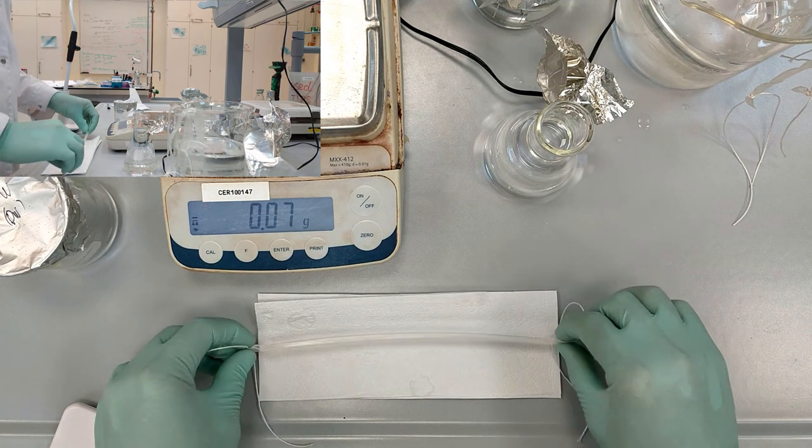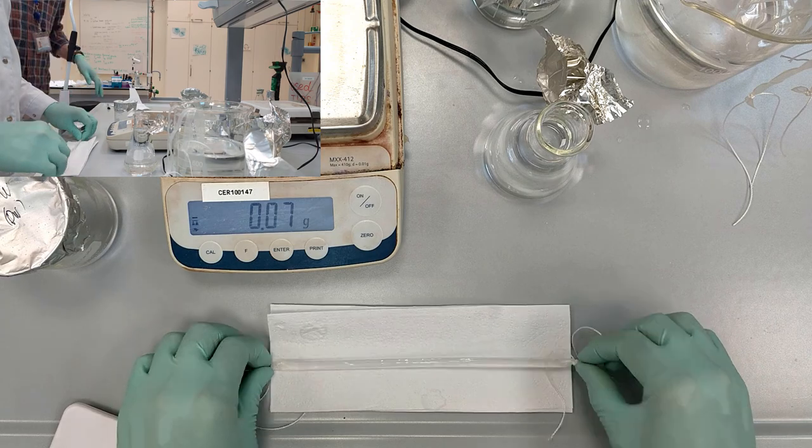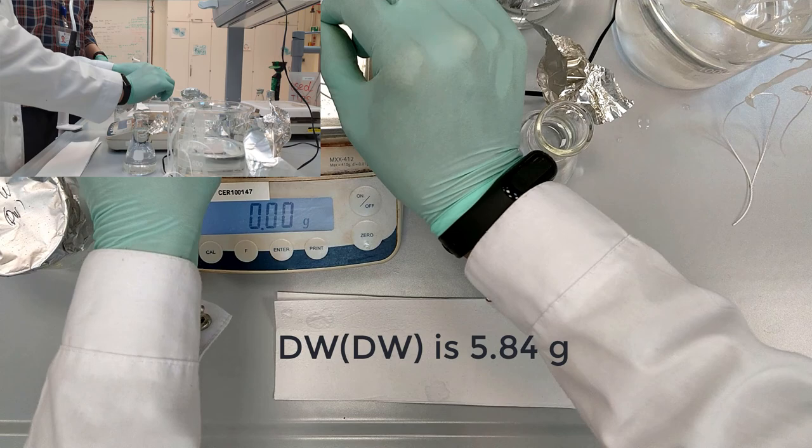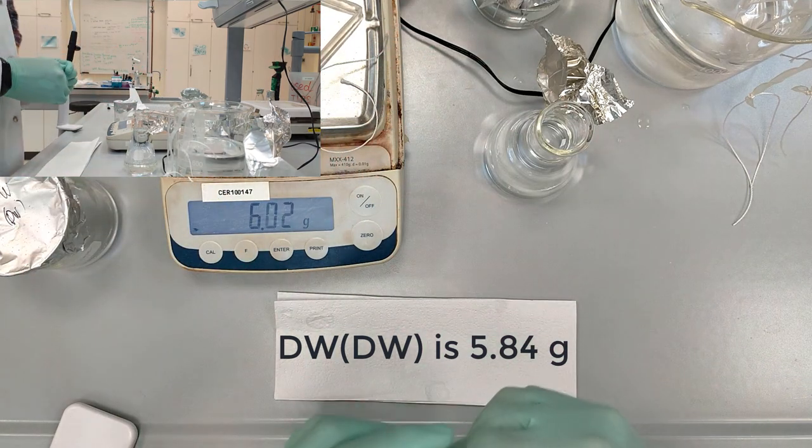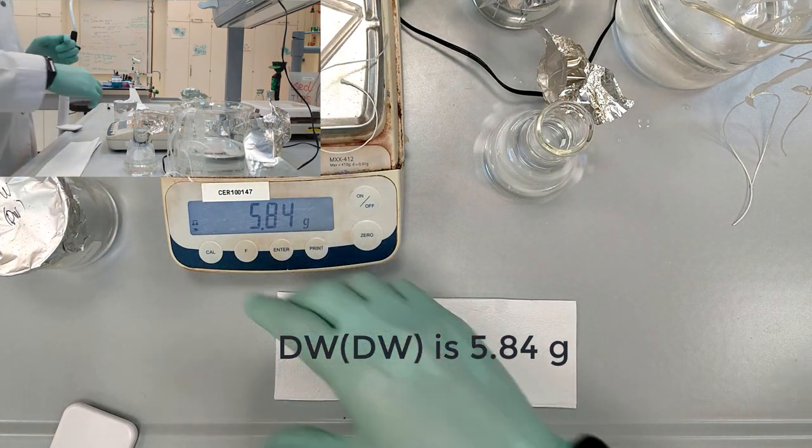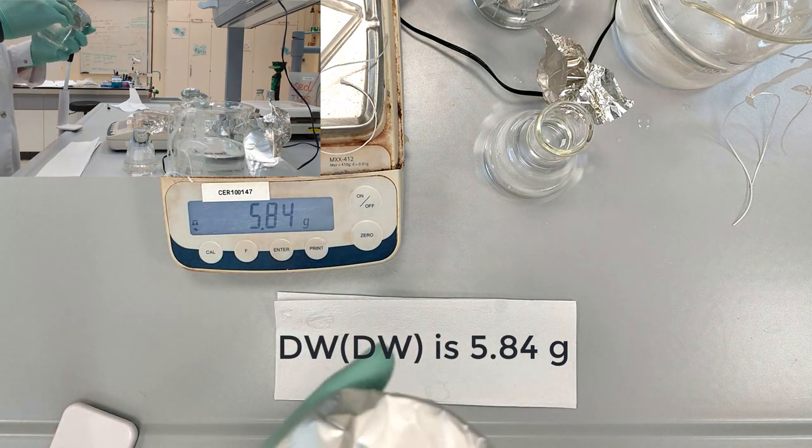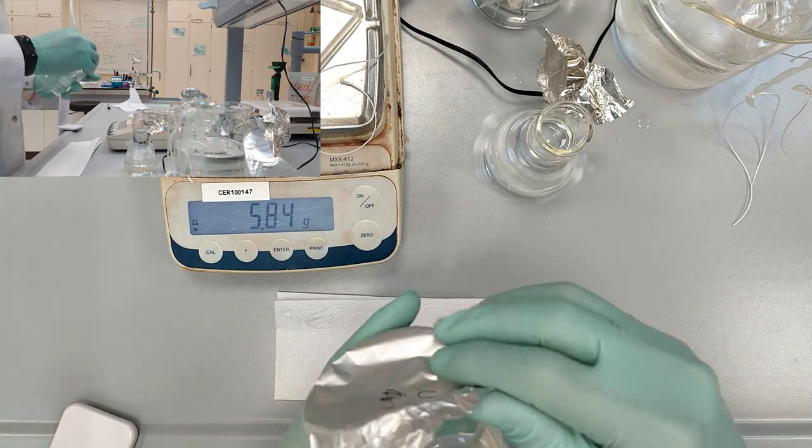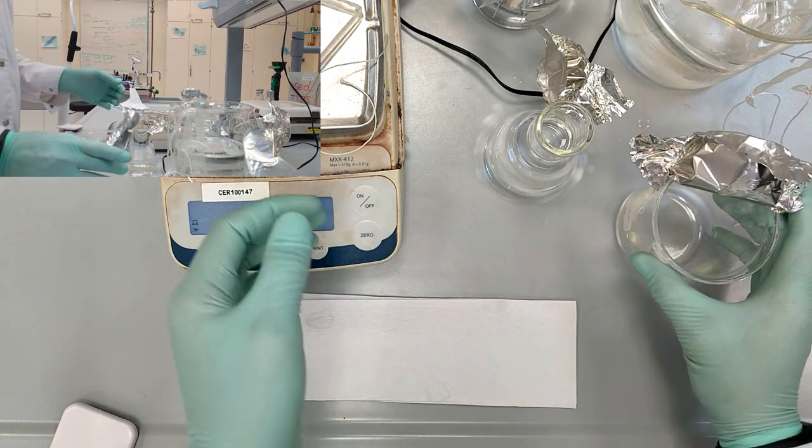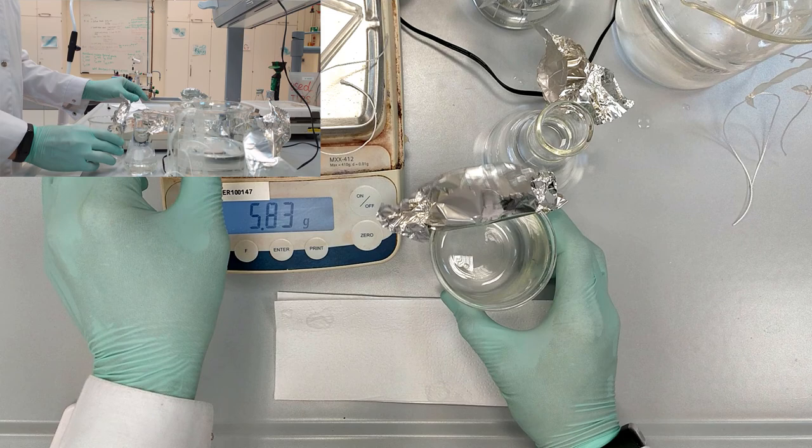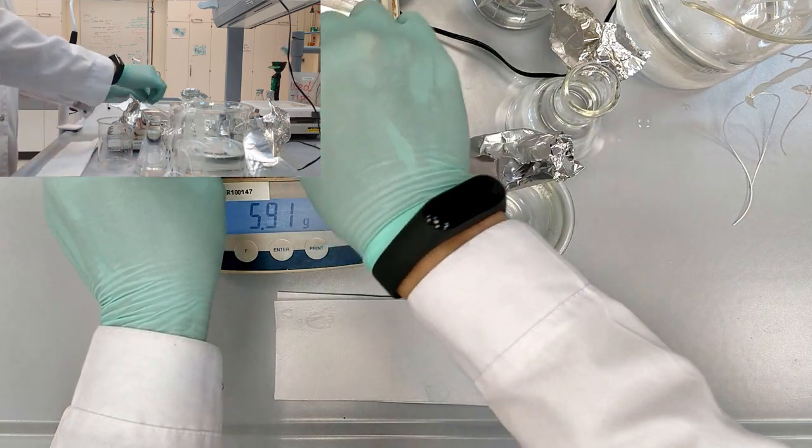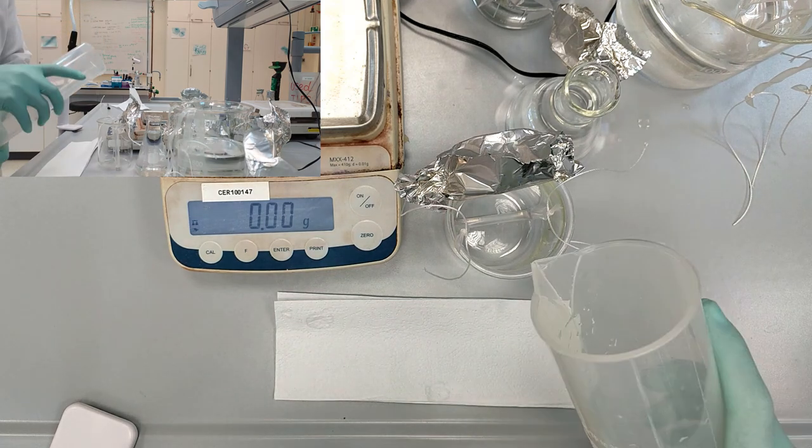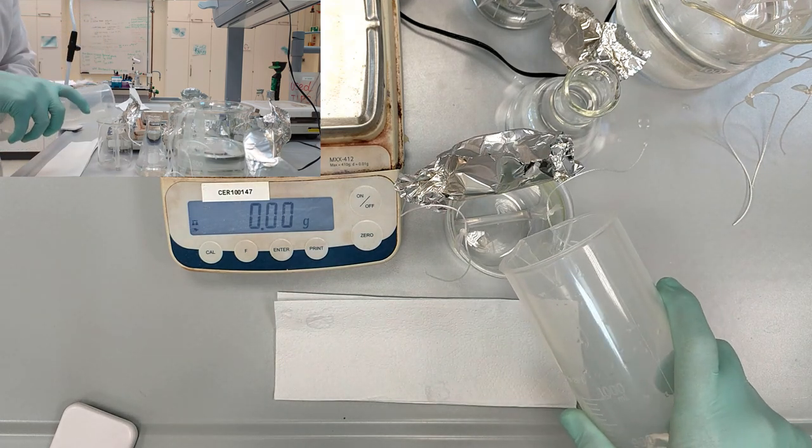After that, put the dialysis tube on the scales. So the mass is 5.84 grams. We are also putting it inside the beaker and pour 200 ml to cover the dialysis tube.